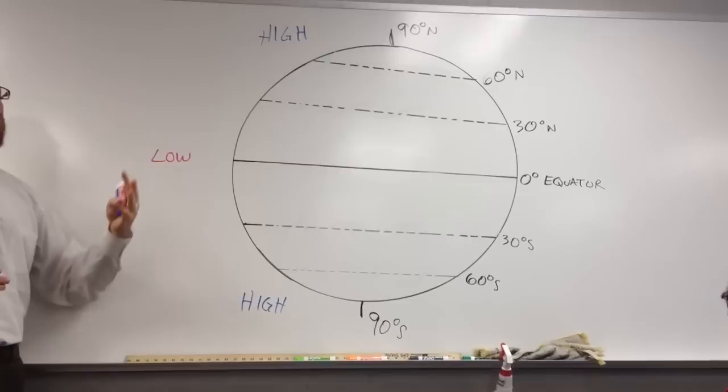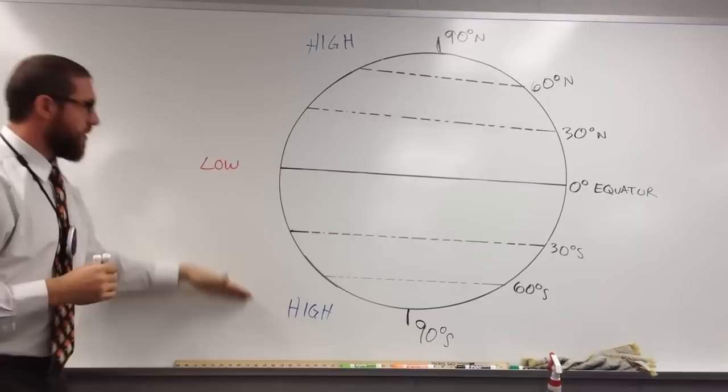Wind typically moves from areas of high pressure to low pressure — high pressure to low pressure.